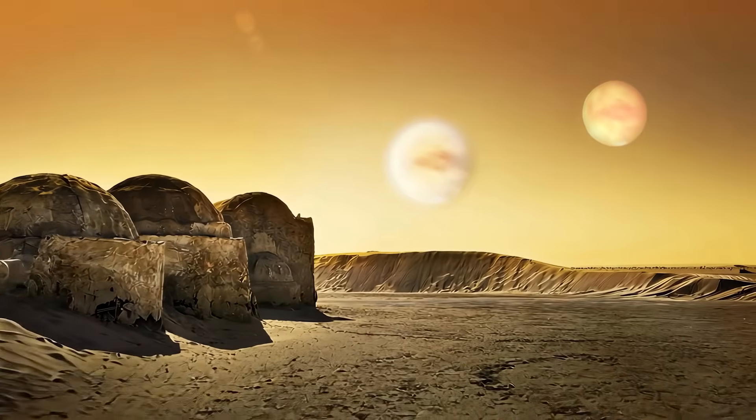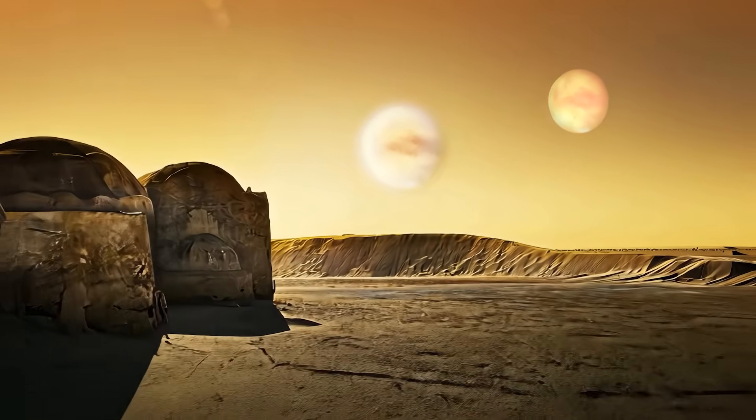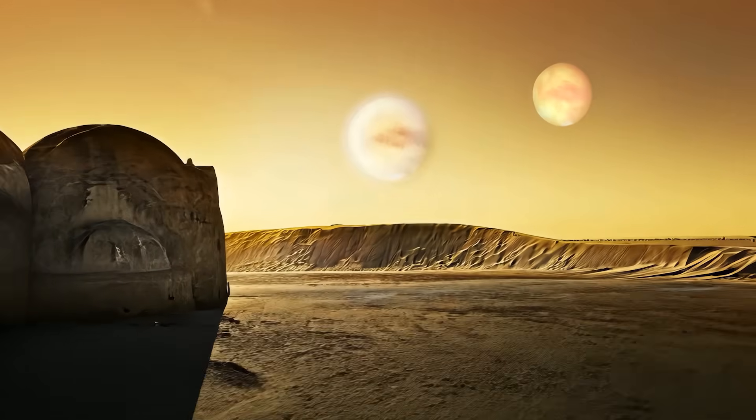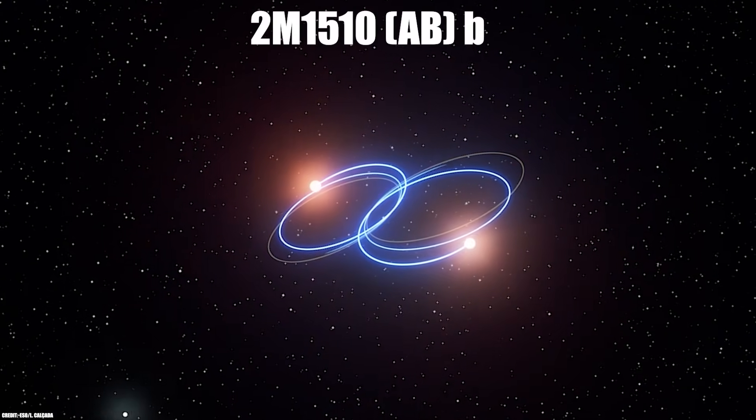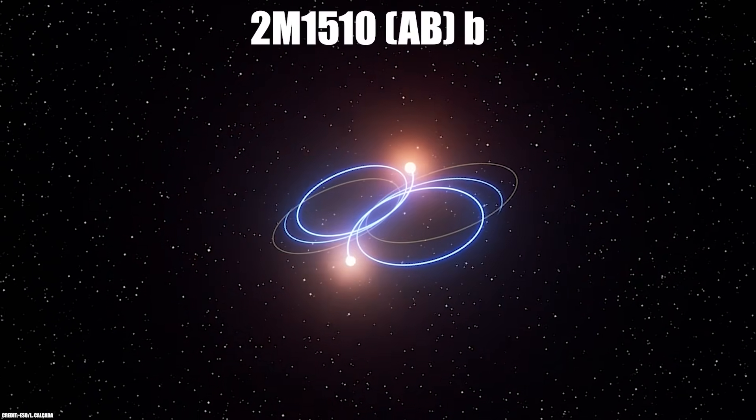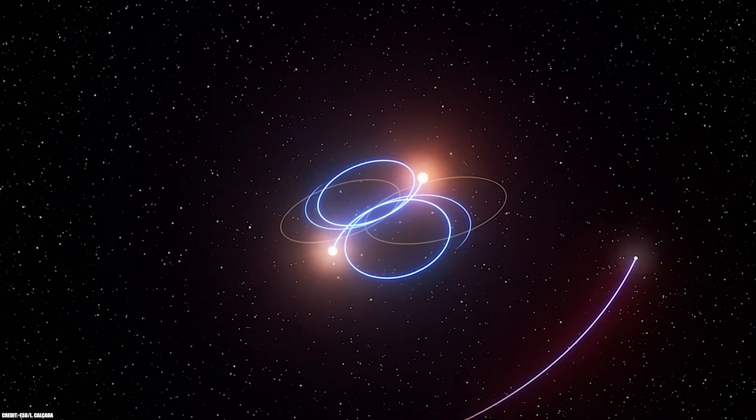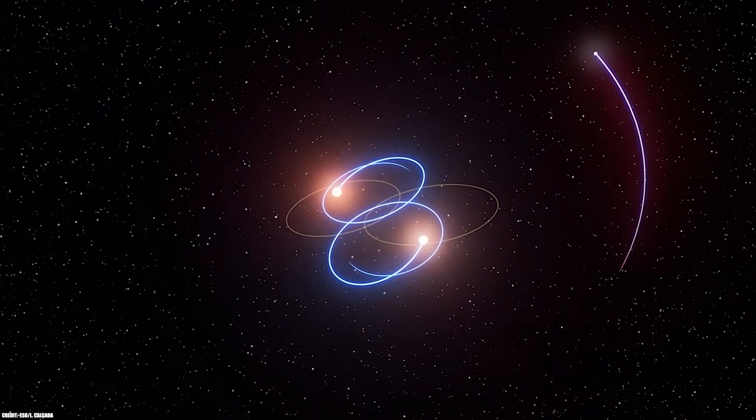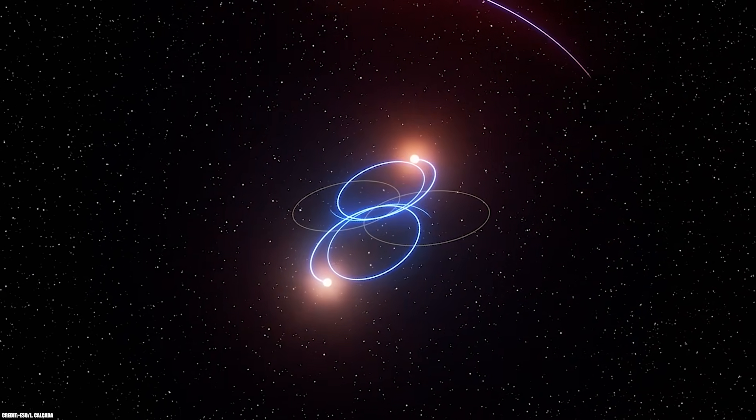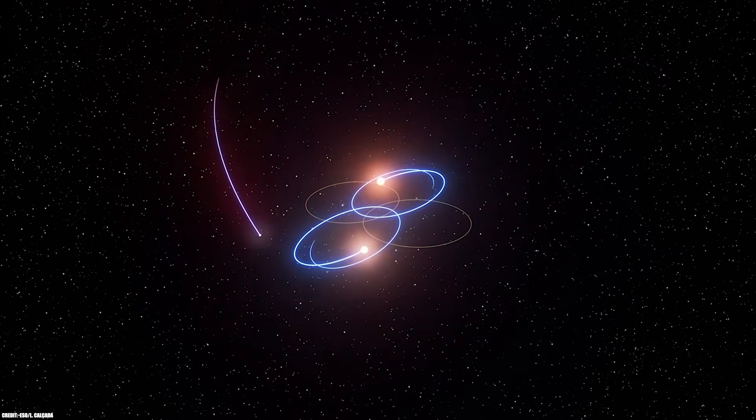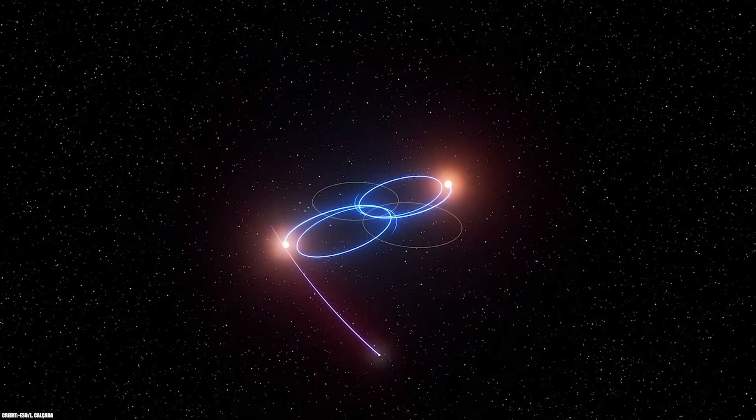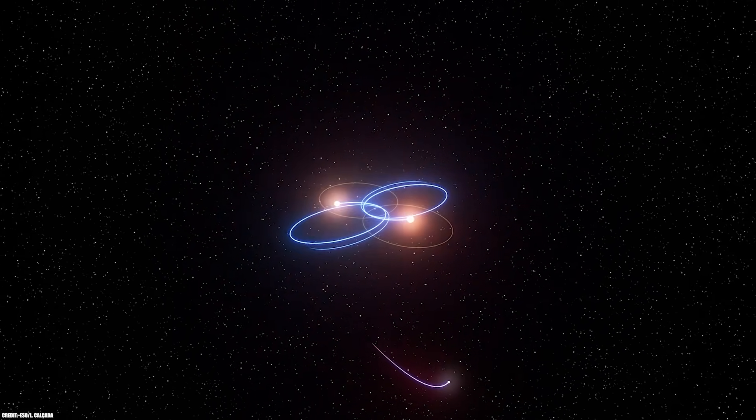Unlike the fictional desert world from Star Wars, which orbits its binary stars in a flat plane much like Earth orbits our Sun, 2M1510ABb travels in a mind-bending polar orbit. This means it loops over and under its two host stars at a nearly 90-degree angle to their orbital plane, something astronomers had theorized but never actually observed until now.